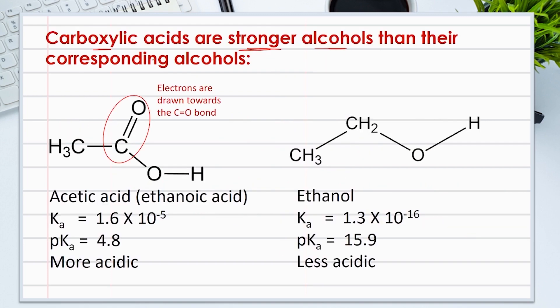Yet carboxylic acids are stronger acids than alcohols. They lose the hydrogen of the carboxylic group more easily compared to alcohols. The reason behind the stronger acidity of carboxylic compounds compared to alcohols is the presence of the carbonyl group, which weakens the O–H bond and makes it easier to lose a proton. To understand more, let's look at the Ka and pKa values of acetic acid and compare them with the corresponding alcohol, ethanol. Remember, pKa = −log Ka.